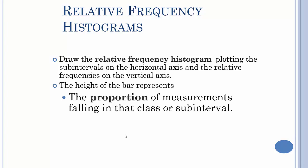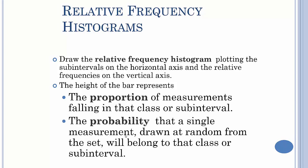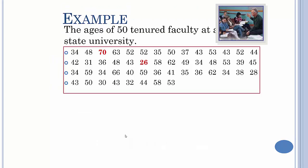The height of the bar represents proportions because we're doing a relative frequency. We could also do the same thing with just a regular old frequency histogram, we just wouldn't be doing relative frequencies, we'd be doing normal frequencies. The probability that a single measurement drawn at random from the set will belong in that class or sub-interval is the same thing as the proportion. If 25% of your data is in the first class, then there's a 25% chance that any data value is in that set. So you can see that percentages go with probabilities hand in hand.